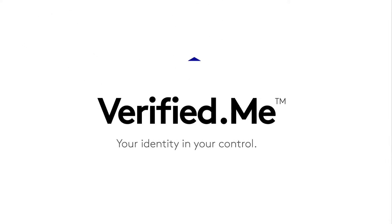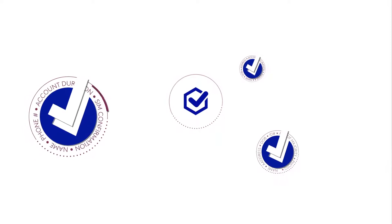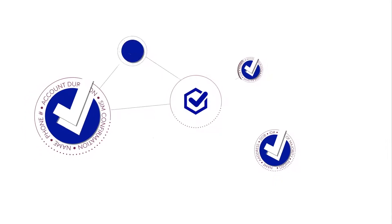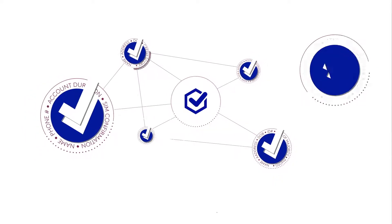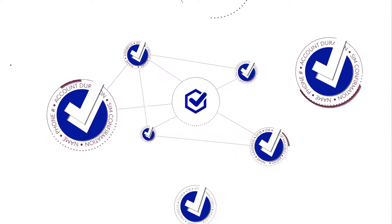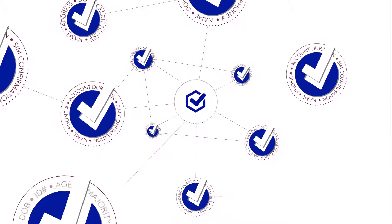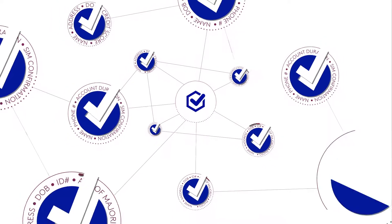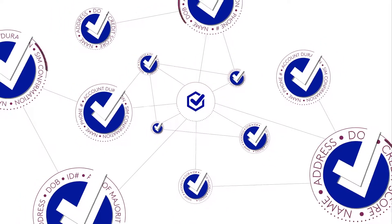A connection is a trusted organization that has certain information about you. Once you've added a connection on Verified Me, you can expressly authorize them to share that information with a service provider through the Verified Me service to help verify your identity and eligibility for service or product offerings.